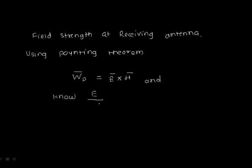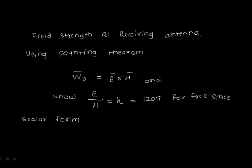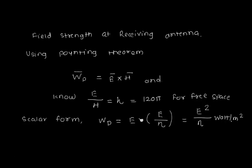We know that E over H equals eta, the free space impedance. This is for free space in scalar form. Writing in scalar form, the power density Wd equals E times (E over eta), because we replace H with E over eta. Solving further, this gives E squared over eta. This is the power density in watts per meter squared.